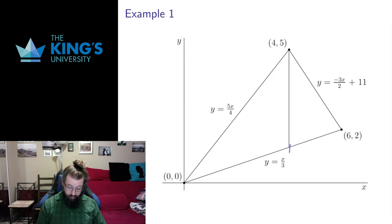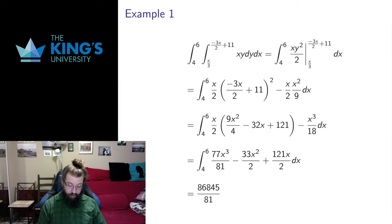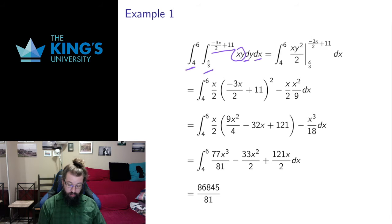Now I'm going to do the second piece. I'll start at x = 4 and go to x = 6. The bottom line is still the same, x over 3, but the top line is now negative 3x/2 plus 11. So I have another integral where x goes from 4 to 6, and y goes from the lower bounding line to the upper bounding line, with the y integral inside the x integral.